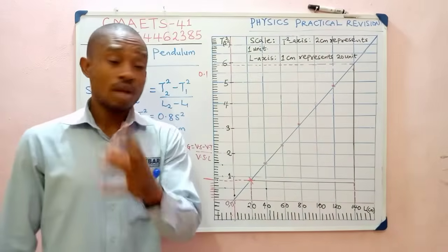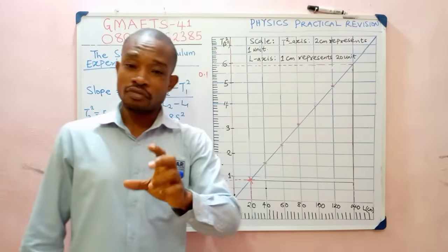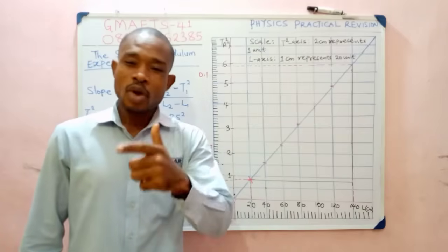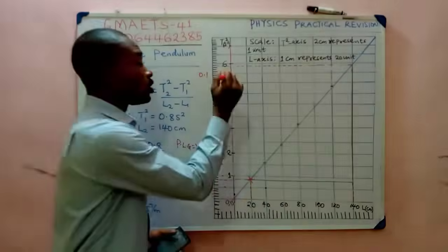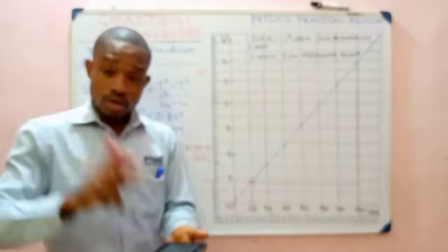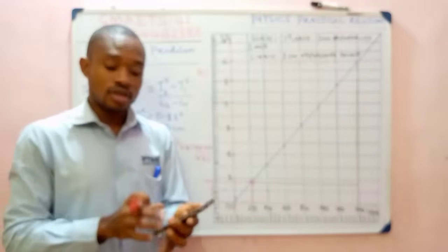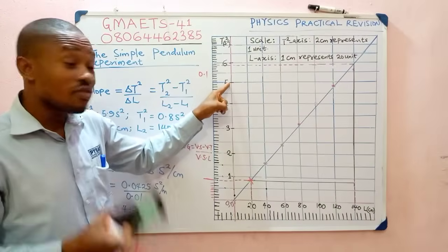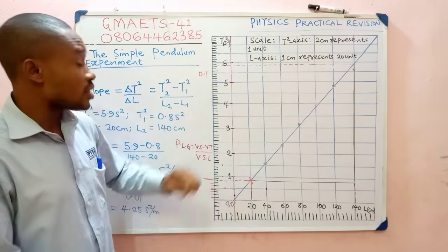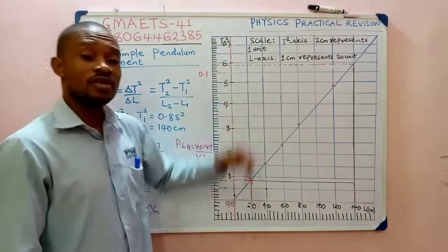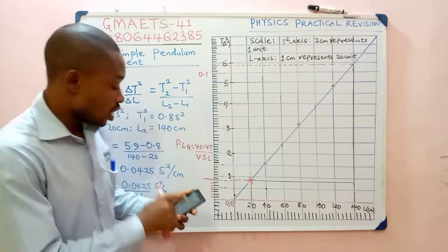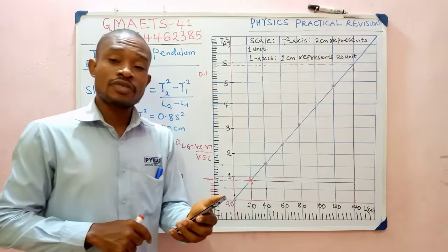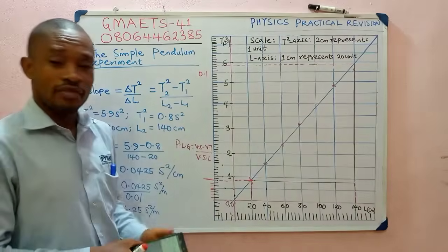Now let's find the last point. From the table, the length is 140 cm and t² is 5.640. We punch 5.640 into our formula: value sought minus value taken from. Since 5.640 is between 5 and 6, the value taken from is 5. So: 5.640 minus 5 = 0.64. Divide by the value of each small line on the vertical axis, which is 0.1.